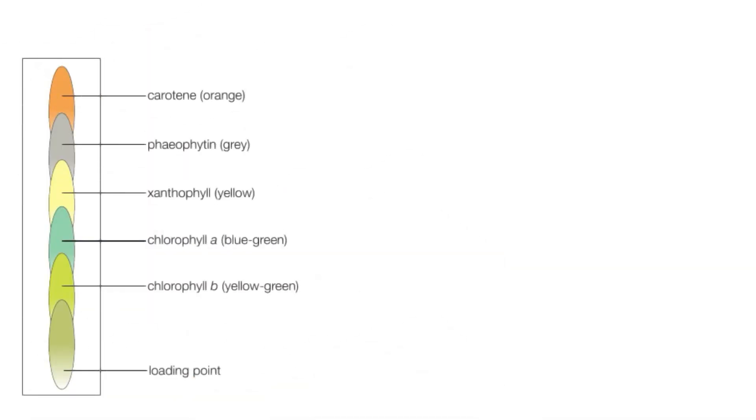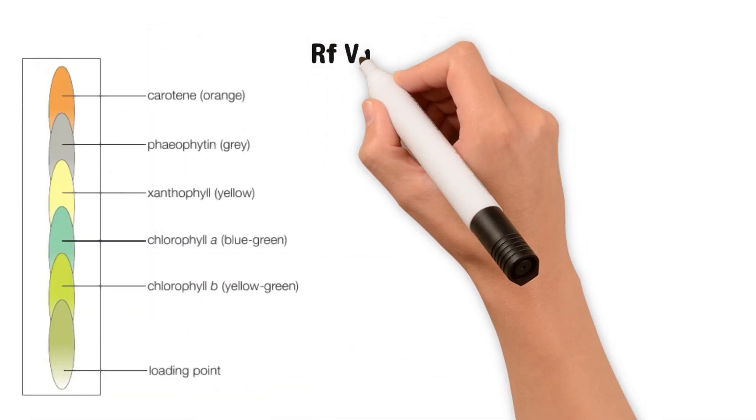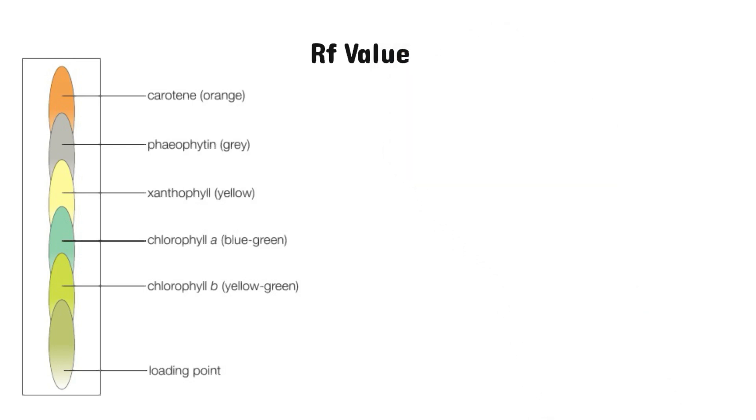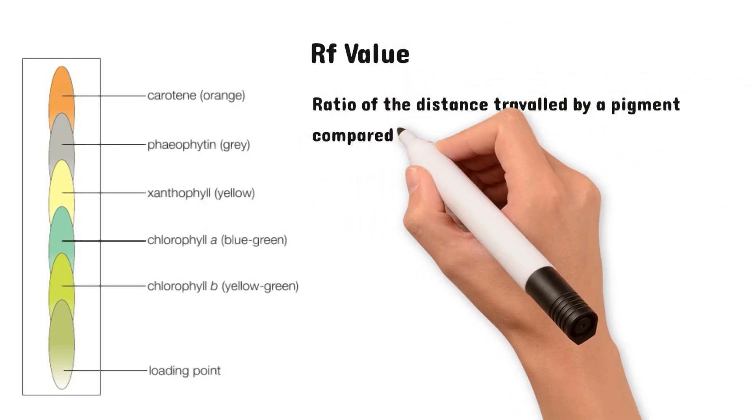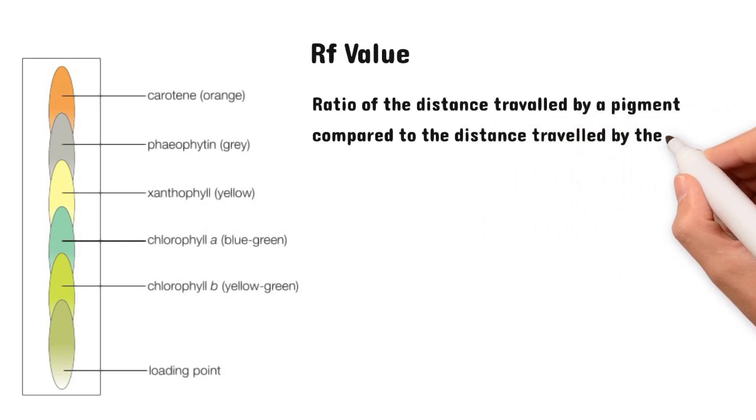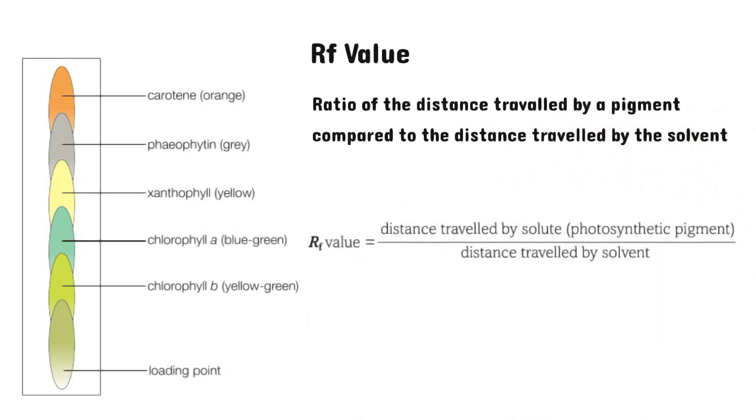Here's an image of the separated pigments. We can use it to calculate the Rf value. Remember that the Rf value is the ratio of the distance traveled by a pigment compared to the distance traveled by a solvent. Rf values are always between zero and one. I like to think of it as one means it's moved 100% of the way and zero means it hasn't moved at all. In this case, for example, carotene looks to be around 0.9 because it's moved about 90% of the way that the solvent has moved.